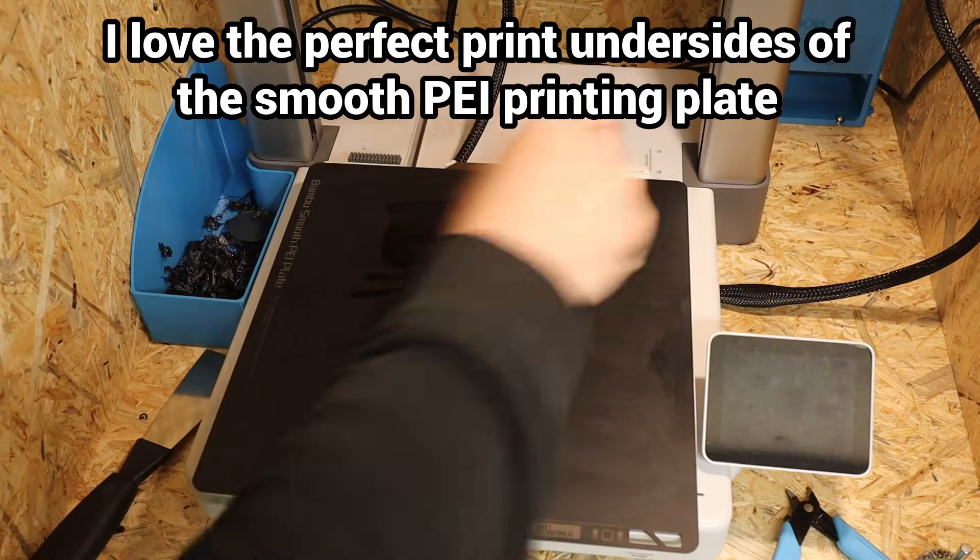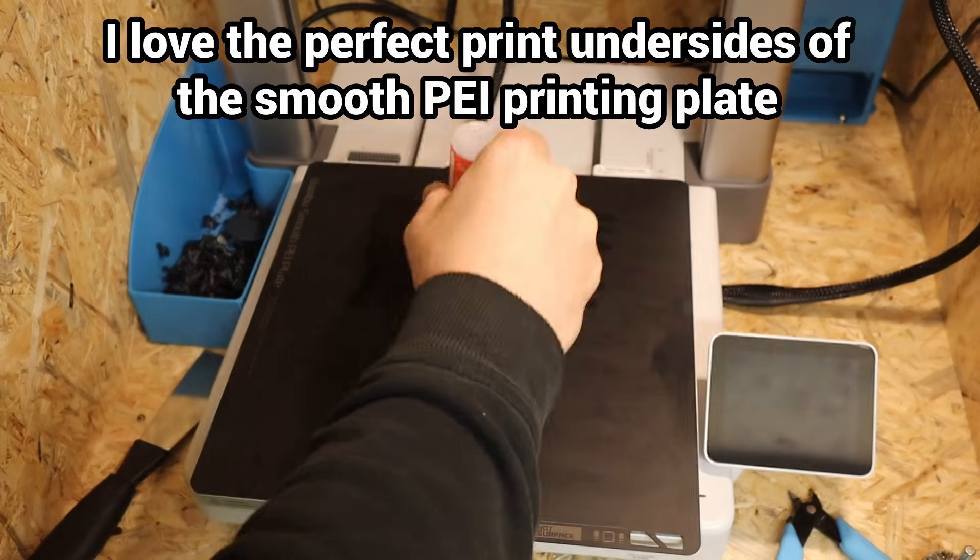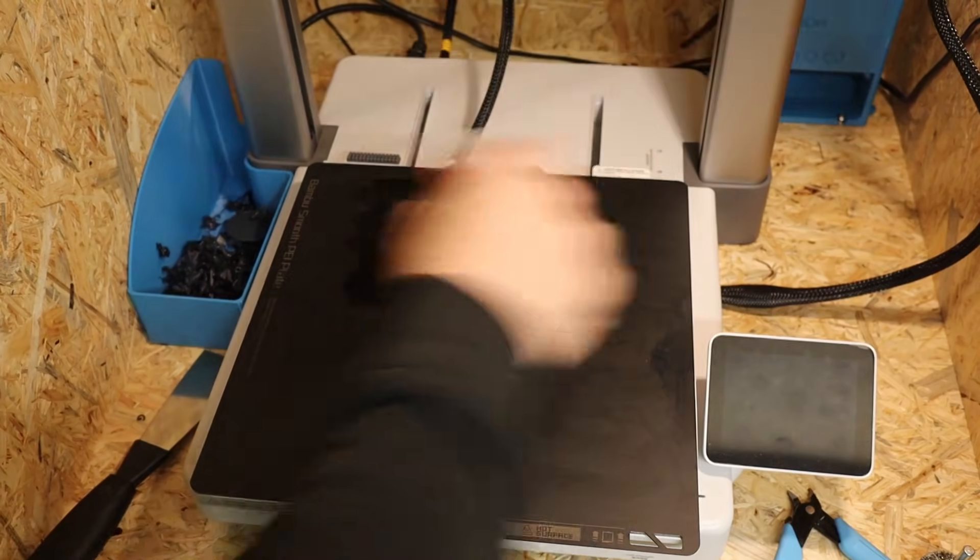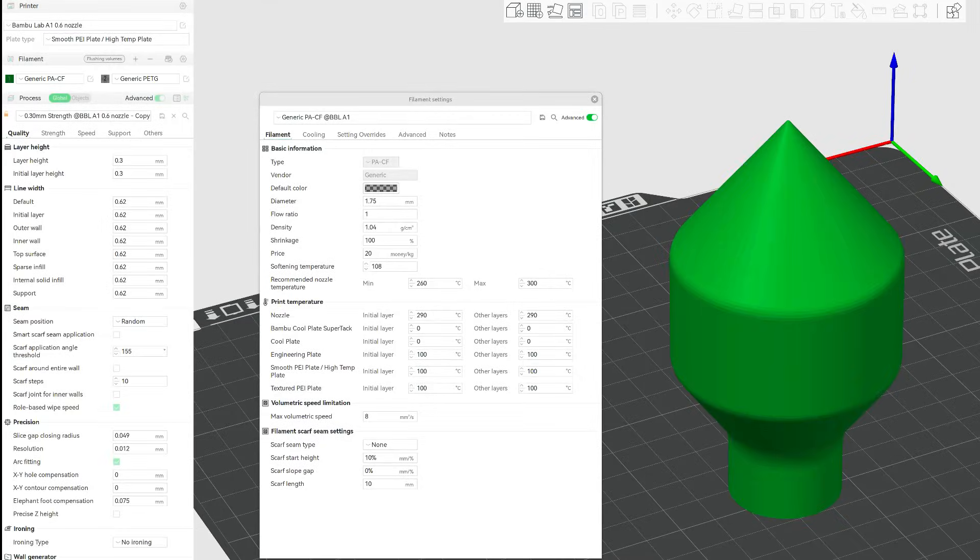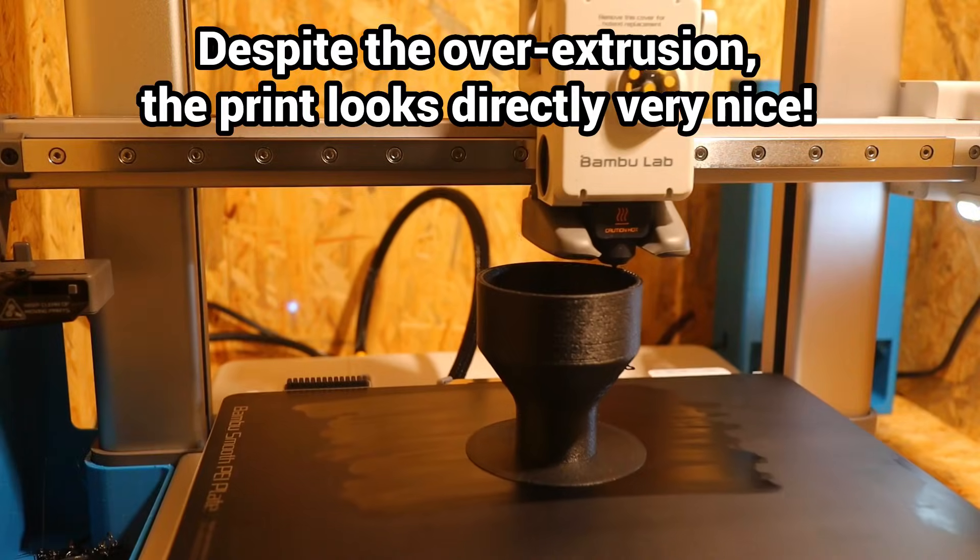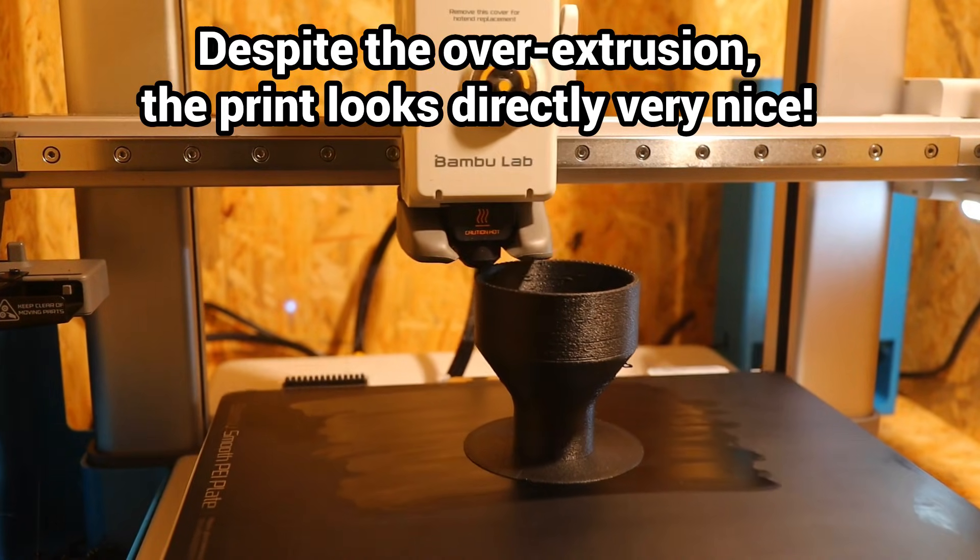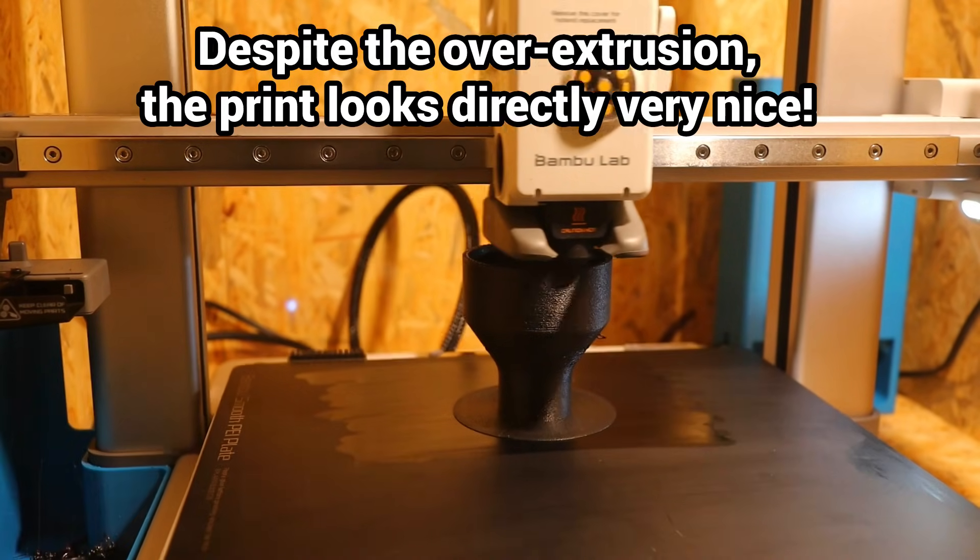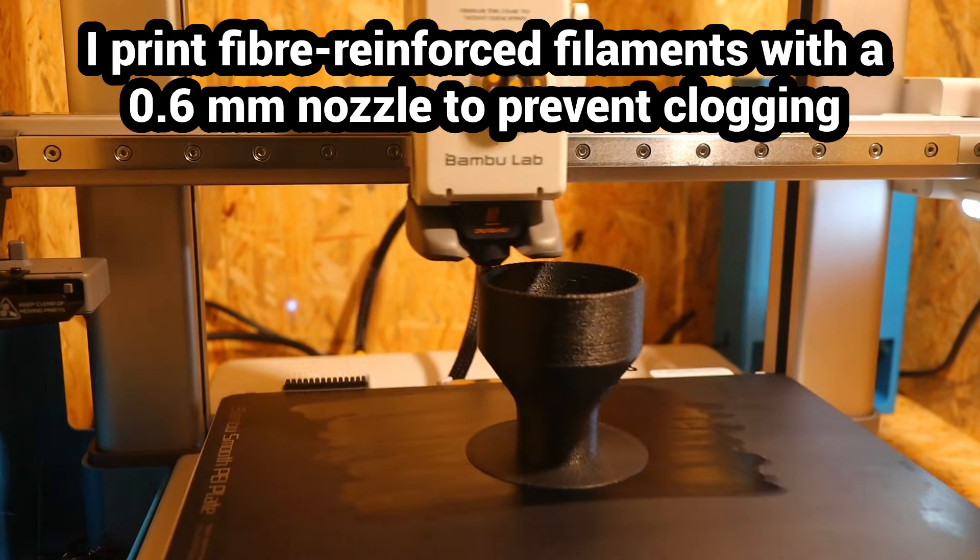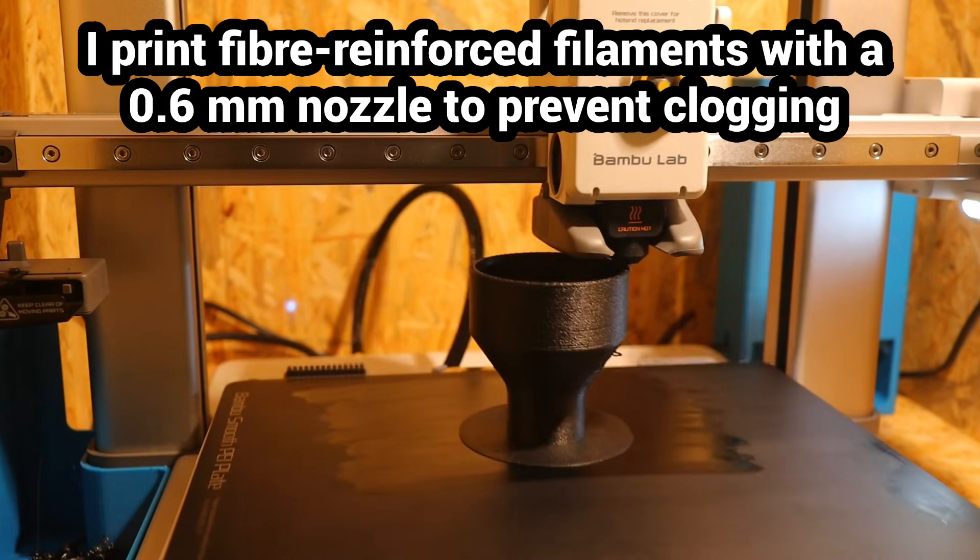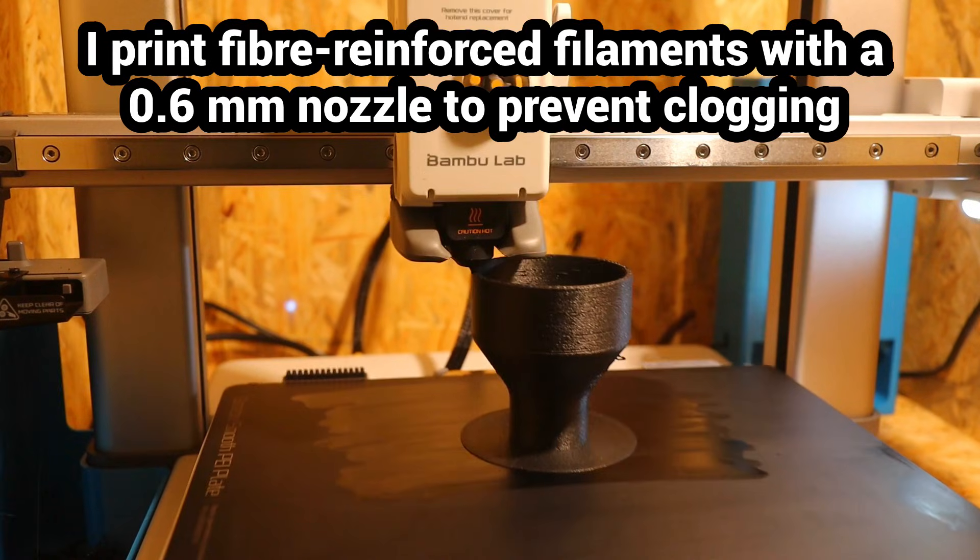With a PEI printing plate and glue stick, the print bed adhesion is very good for me. I used the print values directly from the manufacturer with only a little over-extrusion. This reduces the visual appearance, but increases the strength and tightness. I am very happy with the results straight away. If a very good appearance is important, you can get much more beautiful print results with fine-tuning.